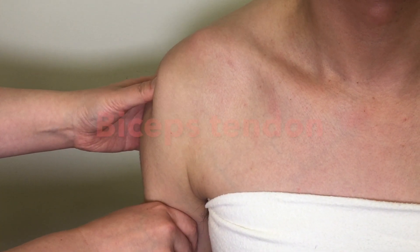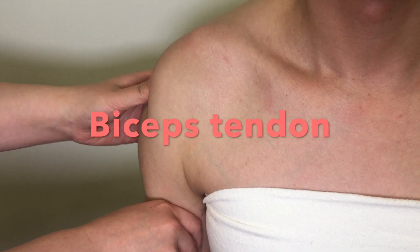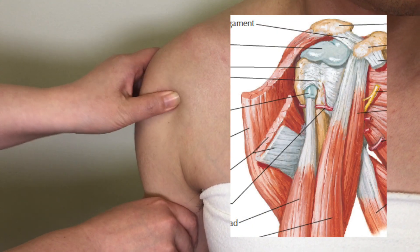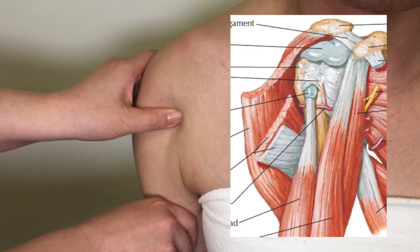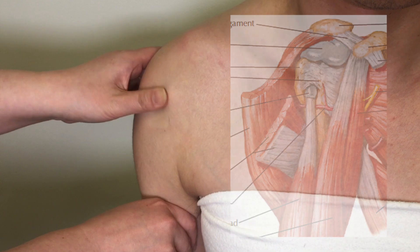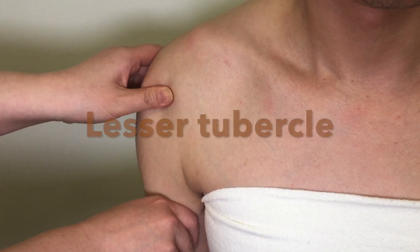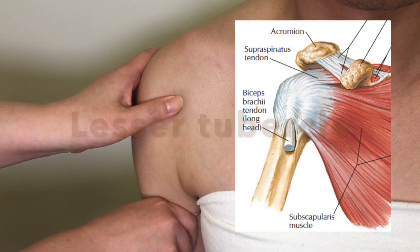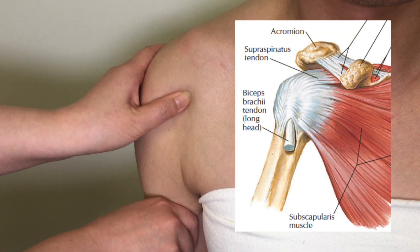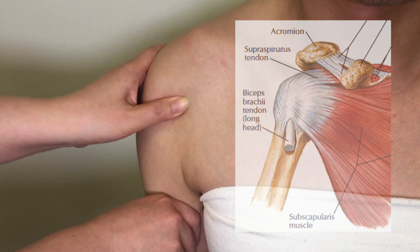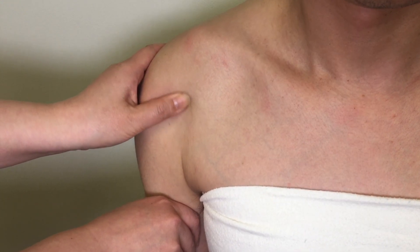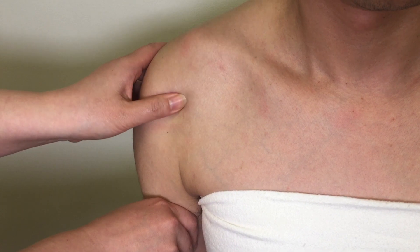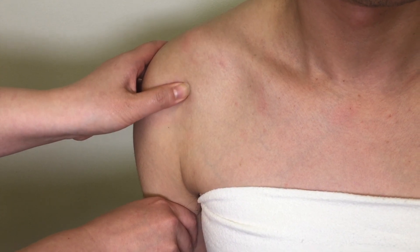From the greater tubercle, move medially onto the tendon of the long head of biceps. Pain on the tendon indicates biceps tendonitis from the bicipital groove. Move medially onto the lesser tubercle to palpate the subscapular tendon. If there is any pain, it indicates tendonitis, sprain, or bursitis.